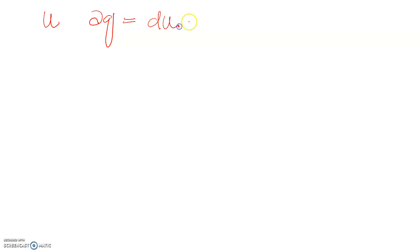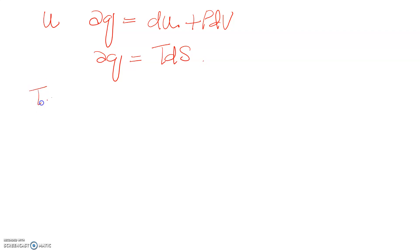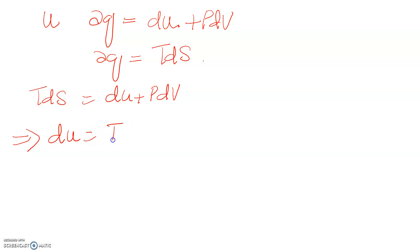Let's see how Maxwell's relation is derived based on internal energy U. According to the first law of thermodynamics the differential form is δQ = dU + PdV, and from the second law δQ = TdS. Combining the first and second law: TdS = dU + PdV, so dU = TdS − PdV.